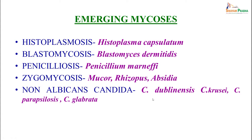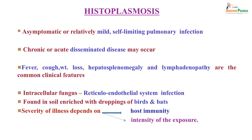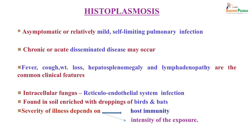Other emerging mycoses causing pulmonary infections include histoplasmosis, blastomycosis, penicillosis, zygomycosis, and non-albicans Candida. Histoplasmosis caused by Histoplasma capsulatum is usually an asymptomatic or mild self-limiting pulmonary infection, though chronic or acute disseminated disease can also occur with fever, cough, weight loss, hepatosplenomegaly, and lymphadenopathy. It is an intracellular parasite residing in the reticuloendothelial system. Histoplasma is found in soil enriched with bird and bat droppings, and infection severity depends on host immunity and exposure intensity.